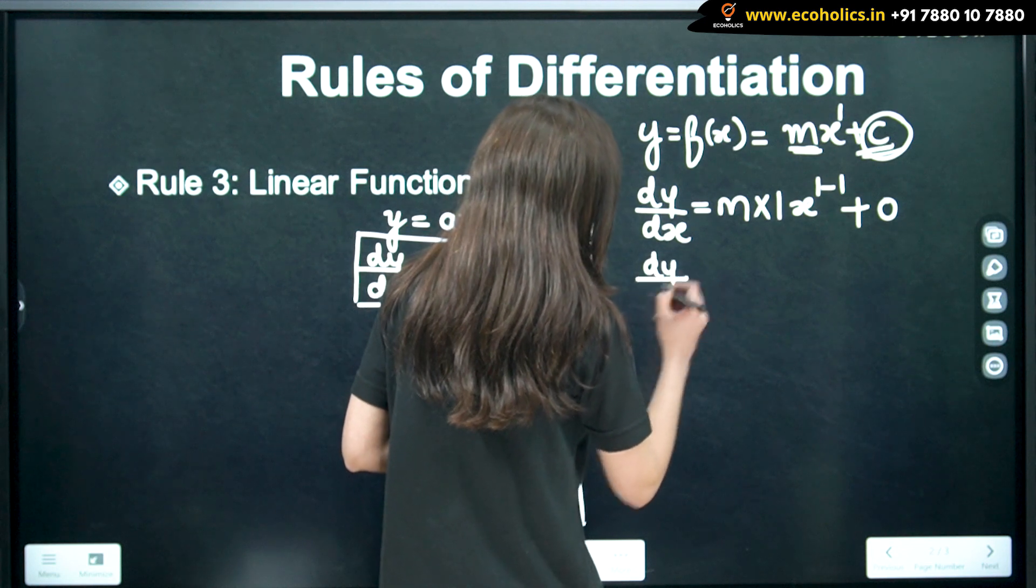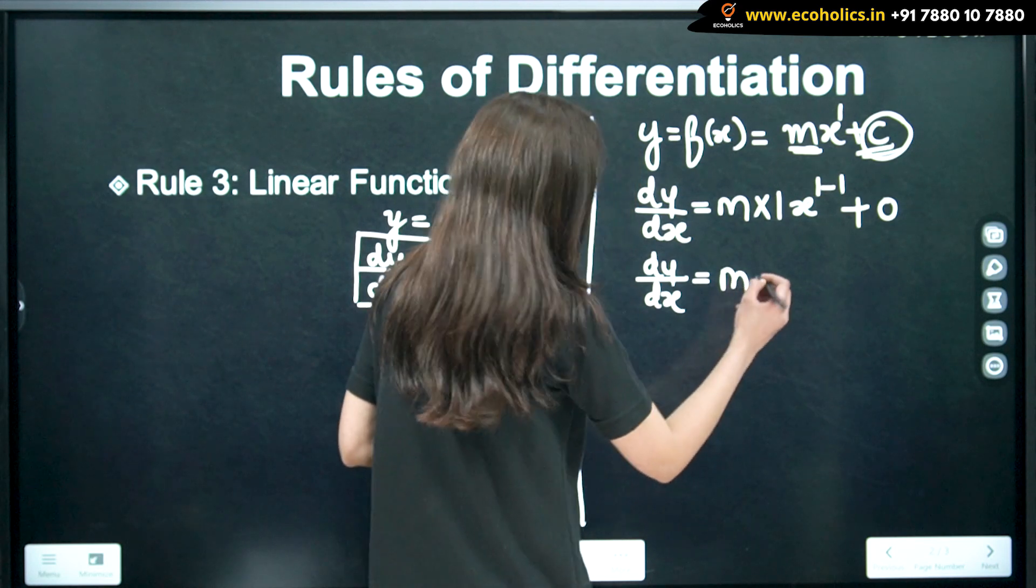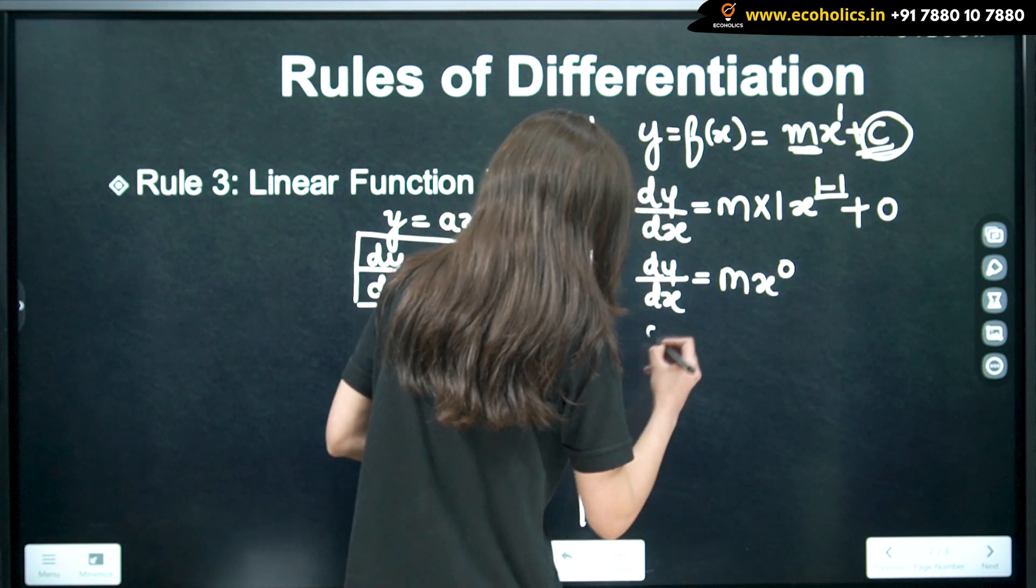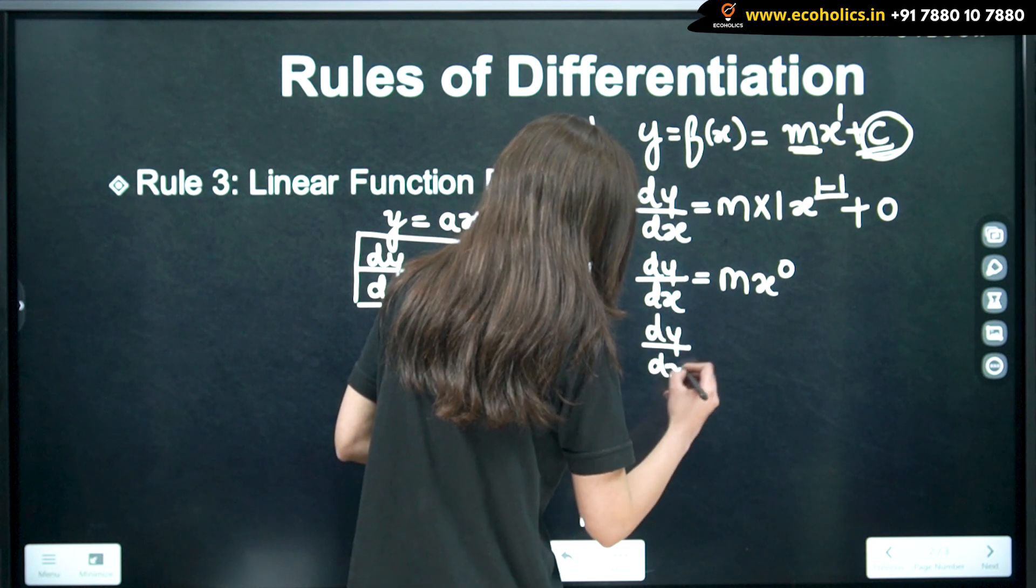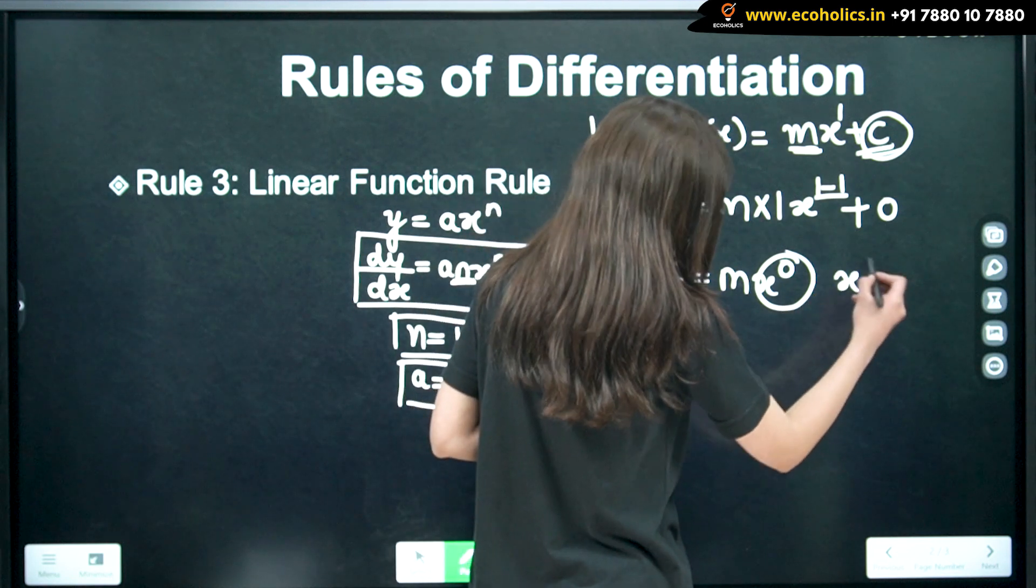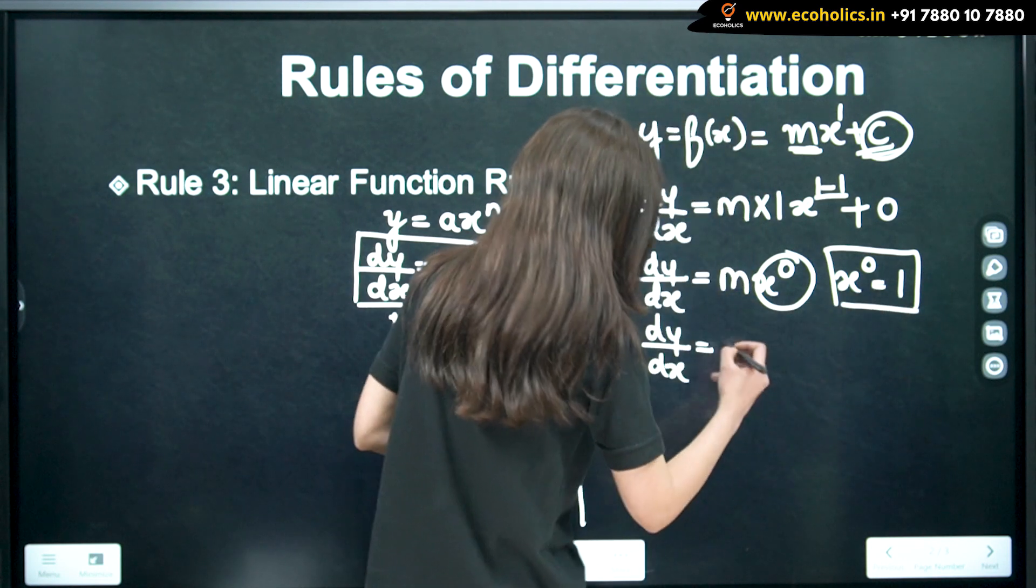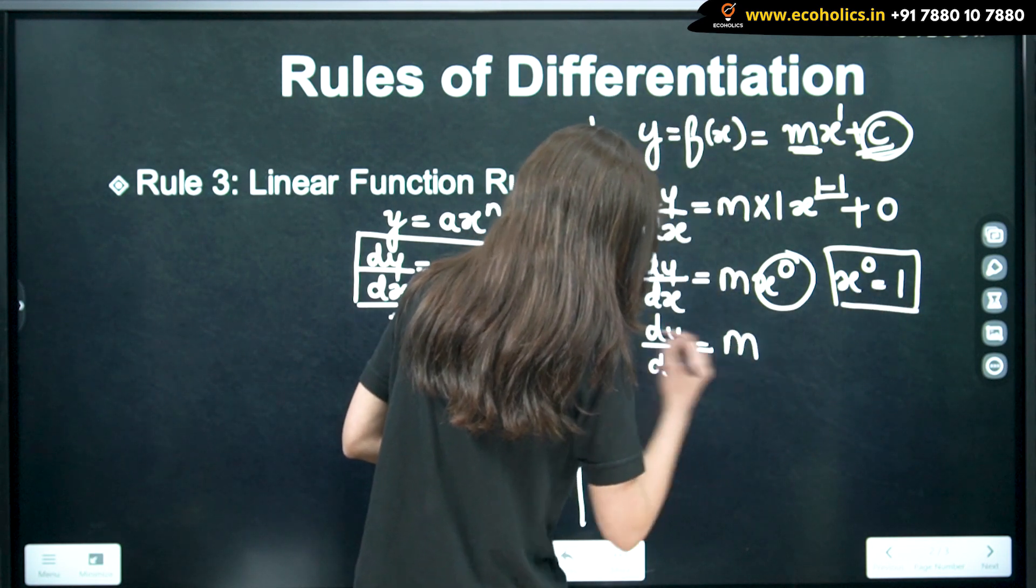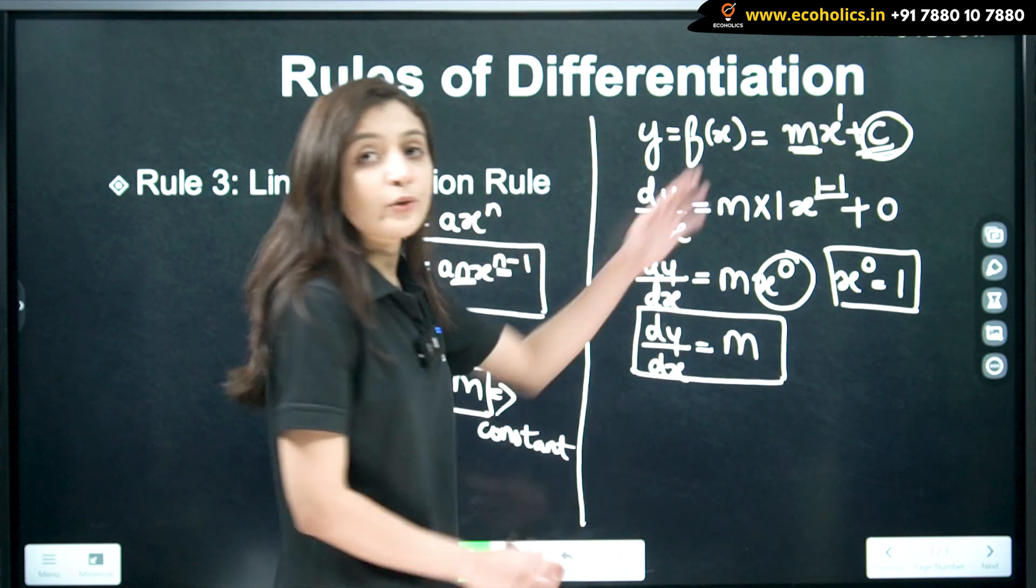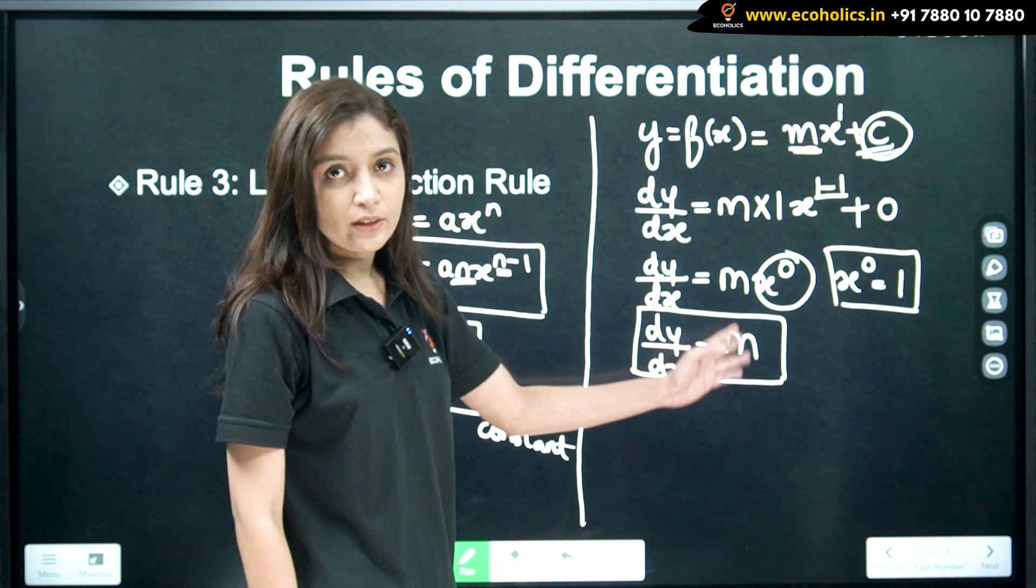So, dy by dx in this case is equal to m. x raised to 1 minus 1 is 0. So, x raised to 0 is 1. x raised to 0 is nothing but 1. So, when we have a linear function y is equal to mx plus c, then we have the derivative simply a constant term m.